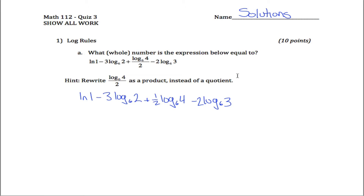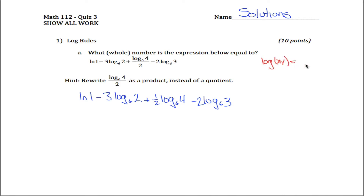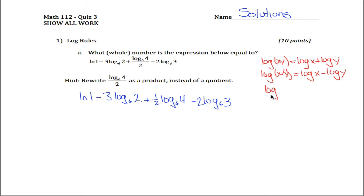I'm going to start applying some log rules. The first log rule is that any time you're taking the log of a product — something times something — you can rewrite it as the sum of those two logs. Similarly, any time you have the log of a quotient, you can rewrite it as the difference of two logs. And the third log rule: any time you're taking the log of something raised to a power, you can take that power and bring it down in front of the log.